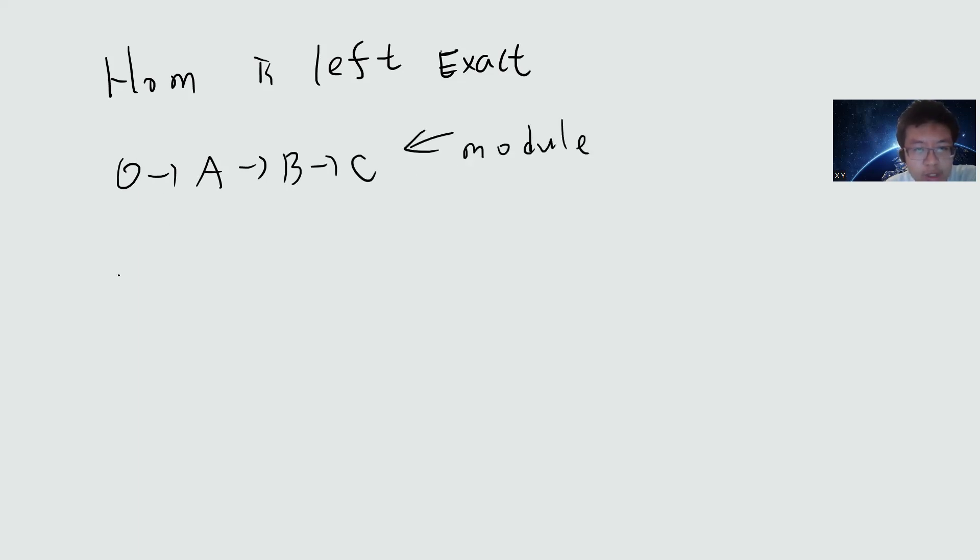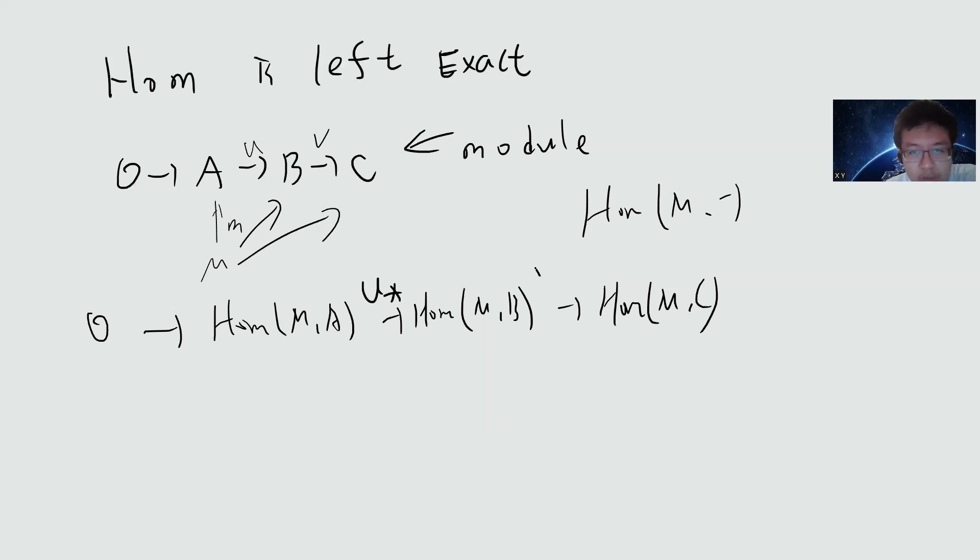So our setting is that everything is a commutative ring with identity. We need to show that if A to B to C is a module, let's say this is a module, then we are going to show that Hom(M,-) is exact. So we get Hom(M,A) to Hom(M,B) to Hom(M,C) are exact.